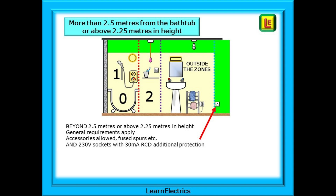Beyond 2.5 meters from the edge of the bathtub, or more than 2.25 meters in height, we are into the green zone on this drawing. Many bathrooms will just exceed 2.25 meters in height — great for mounting ceiling pull switches. But most bathrooms will not have floor spaces greater than 2.5 meters from the bath. In the green space, the general requirements apply to any equipment or wiring. Accessories are allowed — fused spurs, etc. And 230 volt sockets are permitted, but they must have 30 milliamp RCD protection.